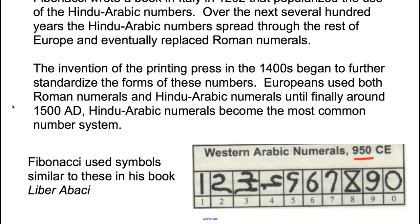Fibonacci used symbols similar to these in his book, Liber Abaci. These are Western Arabic numerals, and you can see how they look similar to what we use now — the way they looked at the time of Fibonacci. This notation dates to around 950 in the common era, and it was already in use by Muslim scholars for hundreds of years by the time Fibonacci saw them.